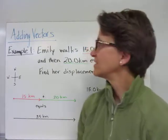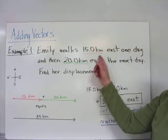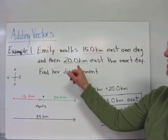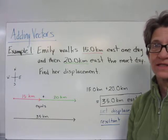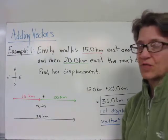Let's add some vectors. In our first example, Emily walks 15 kilometers east one day, and then walks 20 kilometers east the next day. We want to find her total displacement.